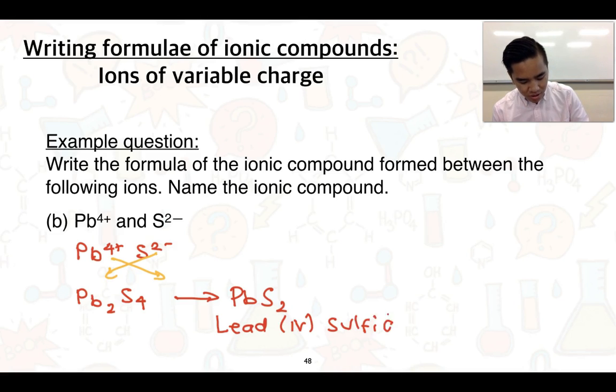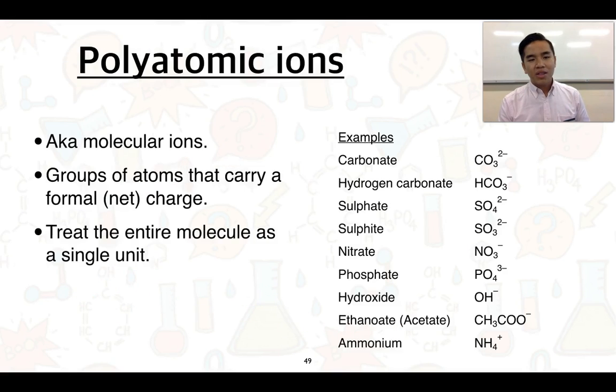The last thing that we're going to consider during this video is about polyatomic ions, and this should have been made apparent to you in previous studies. These are what we can also refer to as molecular ions, and these are just groups of atoms that can carry a formal or a net charge. What we have to do is try and treat these polyatomic ions as single units or single atoms. And when we look at writing the formula of these, it works in exactly the same way, but the only additional point is we need to put this whole group in brackets if we end up with multiple groups in the empirical formula.